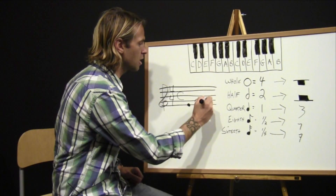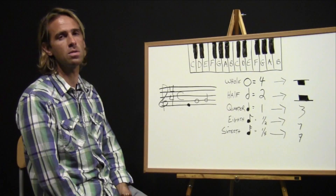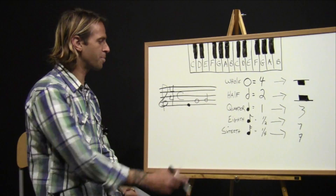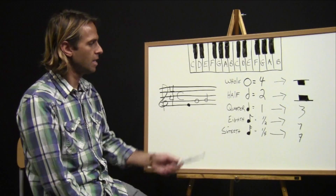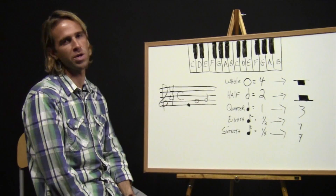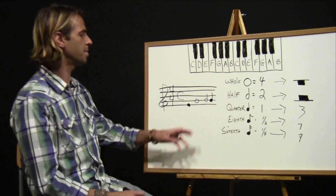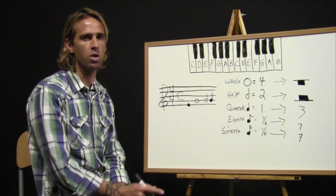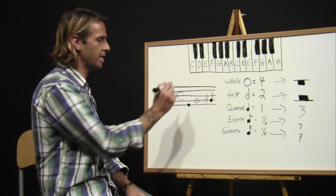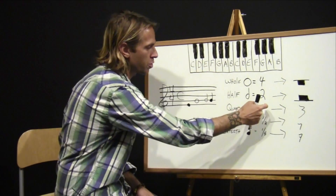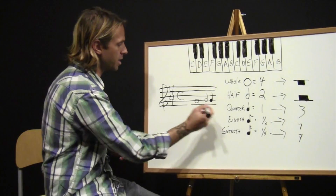Next we have the half note. The half note looks similar to the whole note but it has a stem on top and is hollowed out. The half note is worth two beats, so you'd hit it and it would sustain for two beats at whatever the tempo is. Moving on, we have the quarter note, which looks similar to the half note but is filled in dark. The quarter note is worth one beat — one beat each time the beat hits.